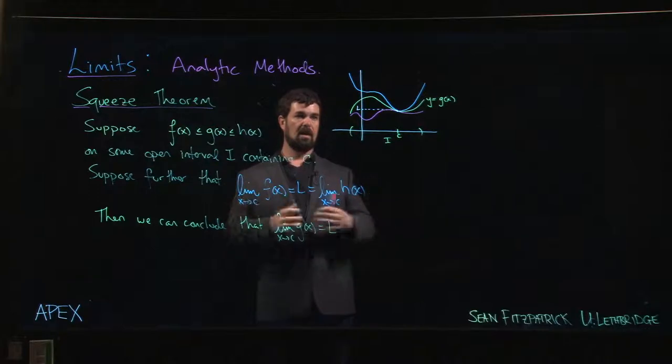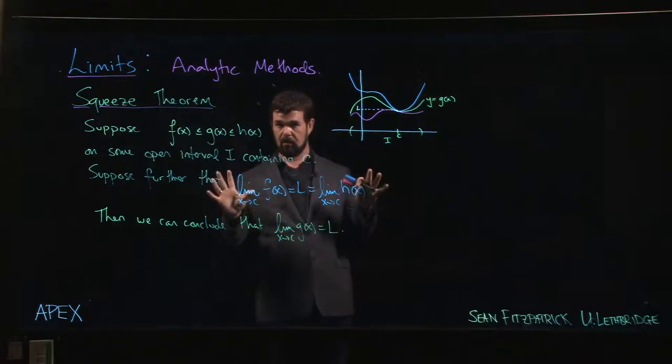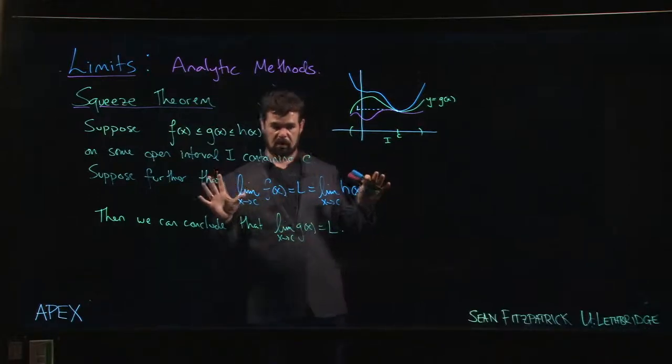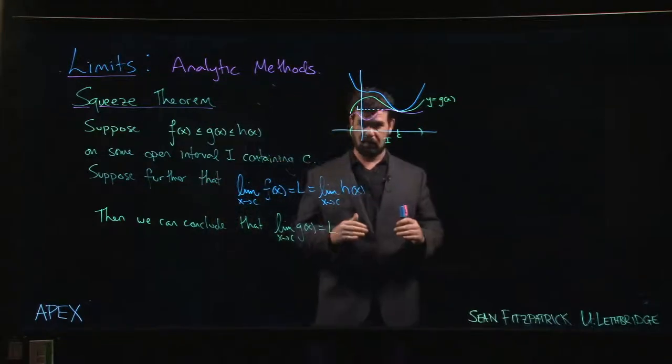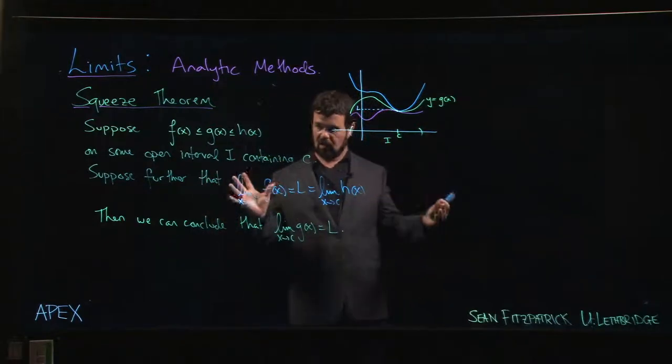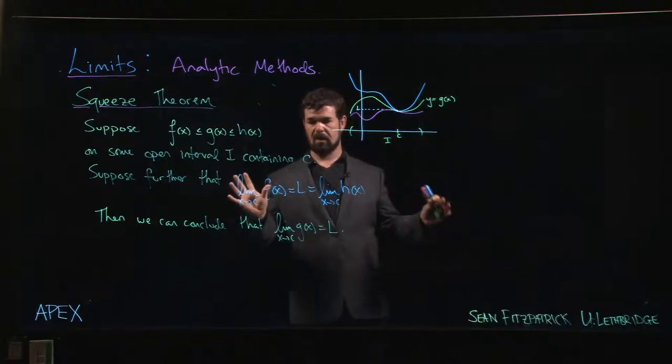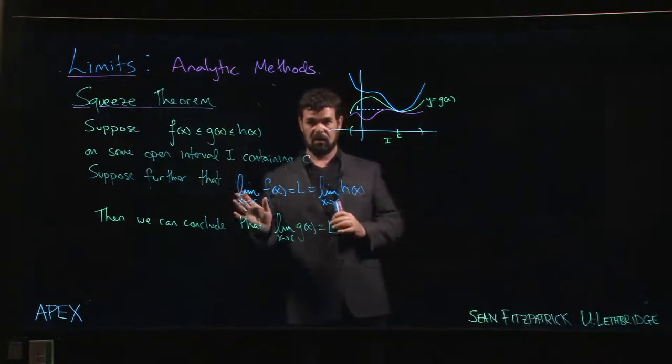So we're going to use the squeeze theorem to prove a few facts about sine, cosine, and also we're going to come back to that limit that we sort of left off with back in one of the very first videos, that sine x over x limit that was sort of mysterious. We're pretty sure the value is one, but we can't quite prove it. We're going to see how to show that using the squeeze theorem.